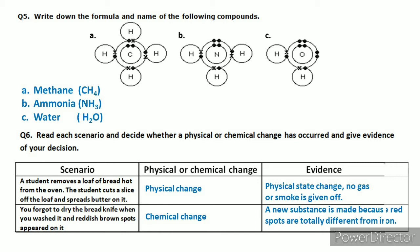For compound B, you are looking at nitrogen in the center with three hydrogens on three sides. The formula is NH3, which is ammonia. For compound C, there is one oxygen connected on two sides to hydrogen — two hydrogens and one oxygen. The formula is H2O, which you all know is water. That was the simplest question.